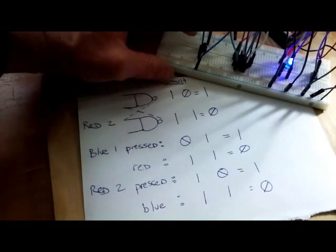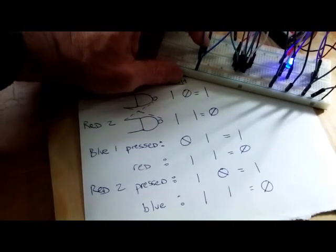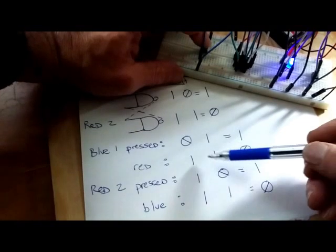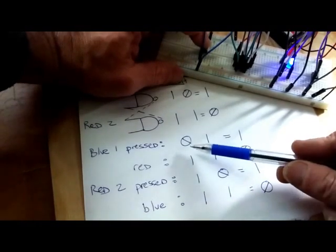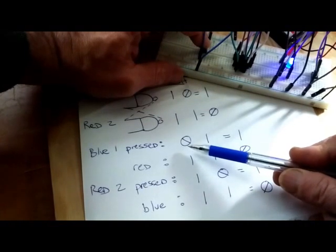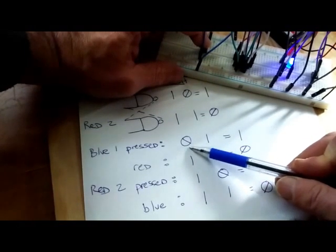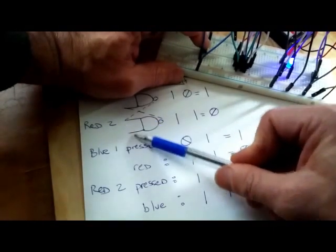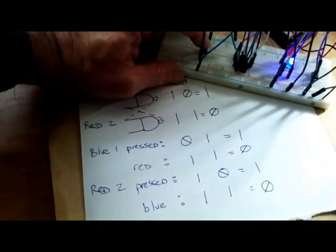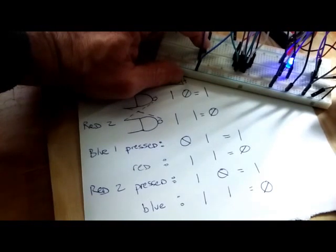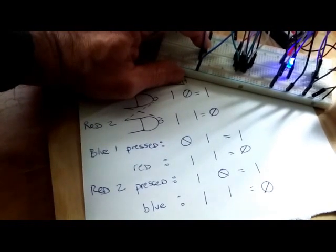Now when we press button number one pertaining to blue, what's going to happen? Well, that essentially opens the circuit or stops the flow of current. So we're going to have at least one false value. And remember, we've got still a true value coming from gate number two, because this switch is still active.